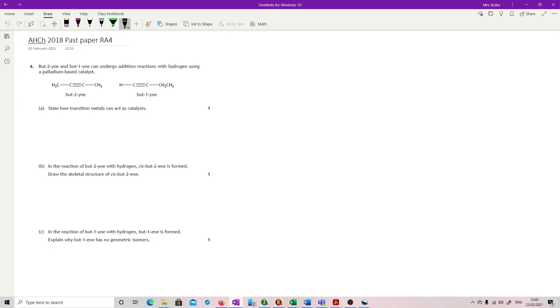Bute-2-ine and bute-1-ine can undergo addition reactions with hydrogen using a palladium-based catalyst. You're given structural formulas, that's fine. State how transition metals can act as catalysts. That's pretty much straight out of content statements. You need to mention d-electrons, but specifically you need to say that they are unpaired. There's lots of ways you can talk about that - you've got unfilled d-orbitals, or these electrons can be either donated or accepted, which is all to do with the variable oxidation states. There's all of that basically in the mark scheme for that one.